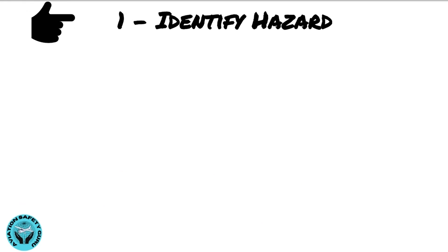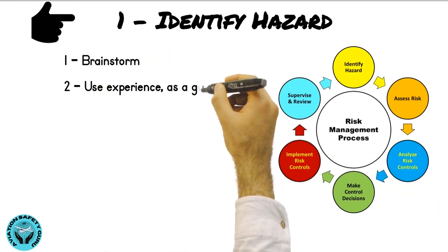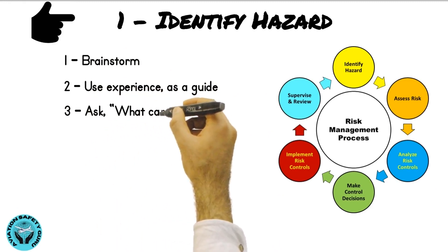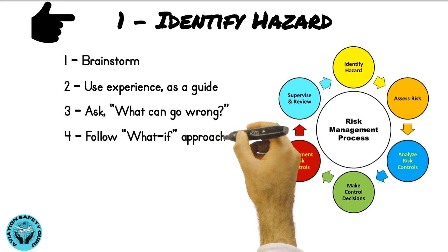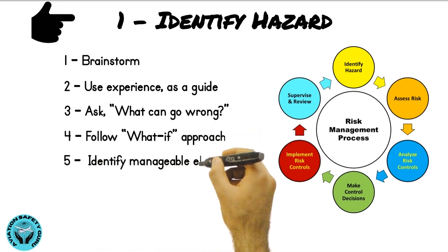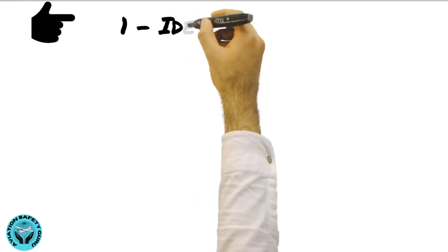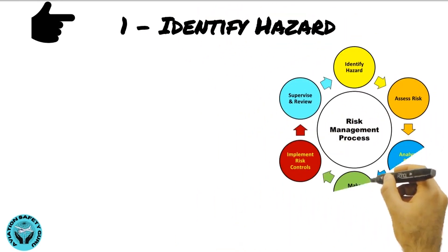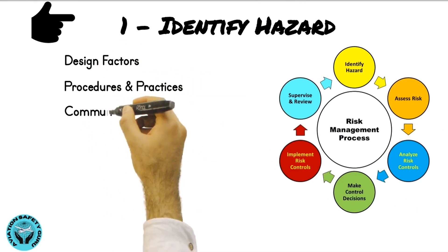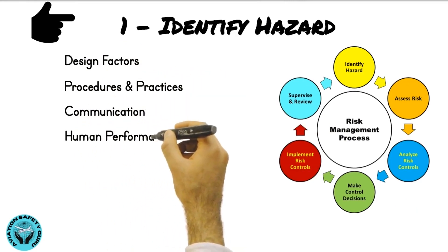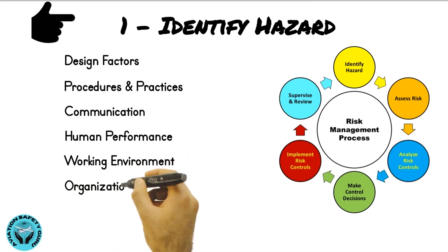In order to identify hazards, you should brainstorm, use experience as a guide, ask what can go wrong, follow a 'what if' approach, and identify manageable elements. Focus on design factors, procedures and practices, communication, human performance, working environment, and organizational factors.